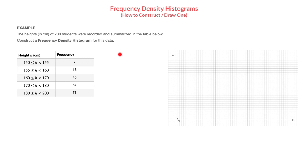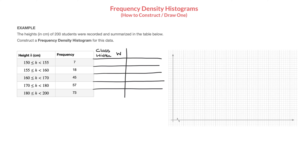To do that, the first thing we need to do is add two columns to our table. The first of which is the class width column — we'll usually refer to the class width with the letter W. Each class width corresponds to the width of the class interval on that row. For this first class interval from 150 to 155 centimeters, the class width equals 5, calculated as 155 minus 150.